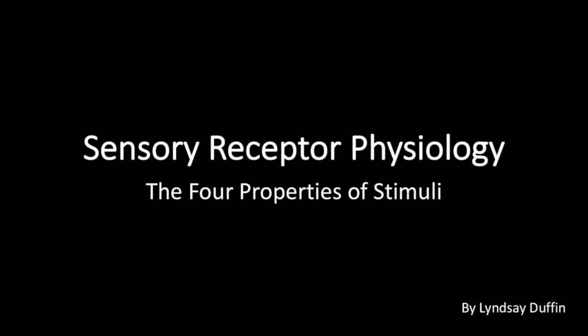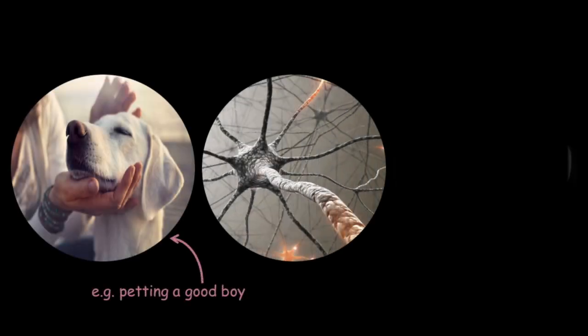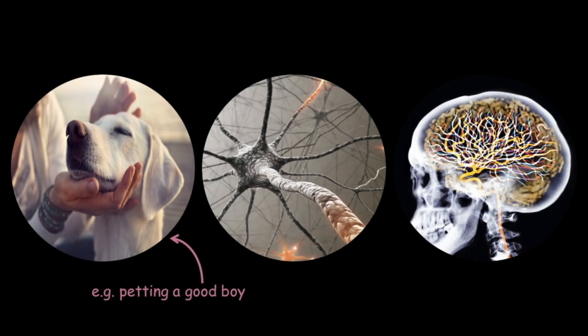Sensory receptors are specialized cells that detect a specific type of stimuli and convert that into nerve impulses to be transmitted to the brain for interpretation. For example, it's your brain's way of knowing that this object is in fact a good boy.